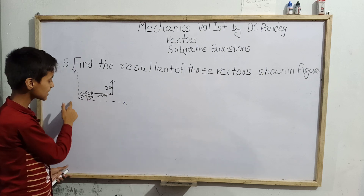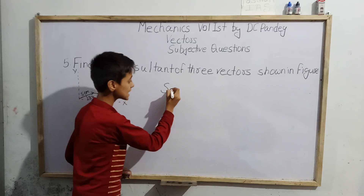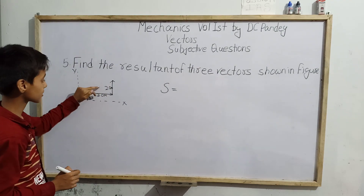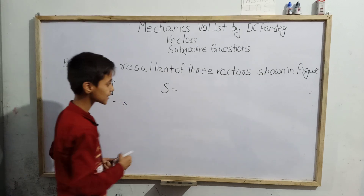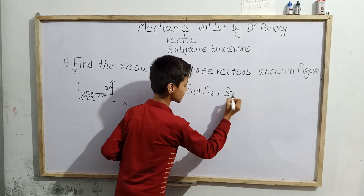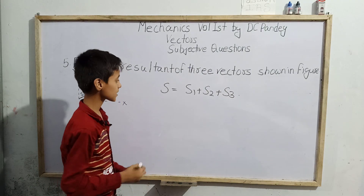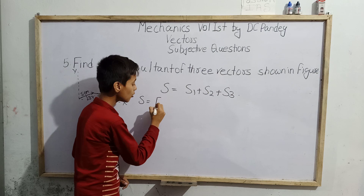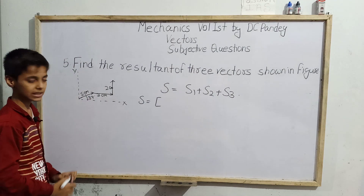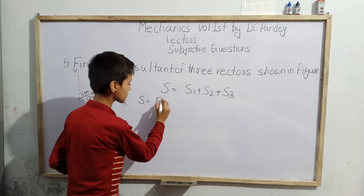Here is the x-axis and here is the y-axis. Whatever be the resultant, let its magnitude be S. If we take S1 as five meters, S2 as three meters, and S3 as two meters, then S = S1 + S2 + S3. According to this we'll put the values. We can see the five-meter vector is making a 37-degree angle with the x-axis, so we'll put the values accordingly.